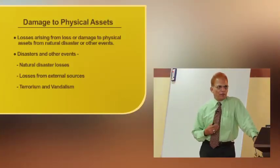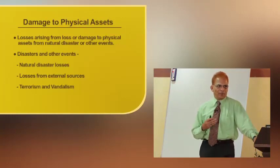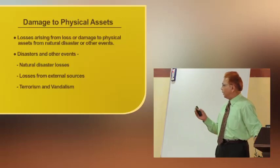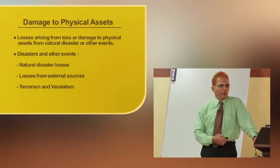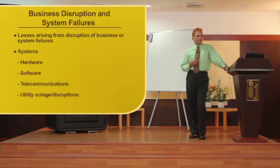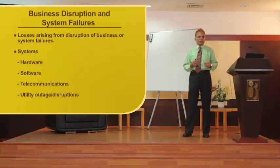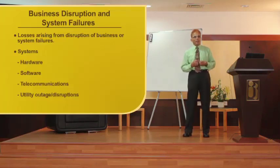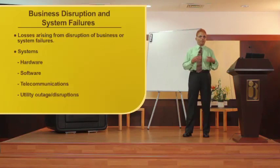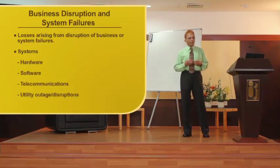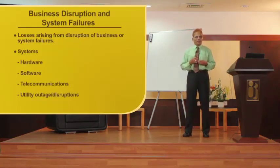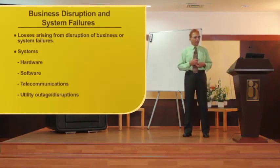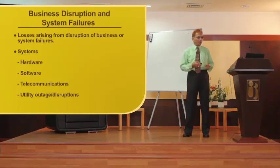Damage to physical assets can result from disaster losses or external sources like terrorism and vandalism, leading to operational risk and losses. Business disruption and system failures are very prominent in the current scenario as banks use technology heavily — through various delivery channels or outsourced system maintenance. System failures include hardware failure, software issues, and telecommunications disruptions associated with centralized core banking services.